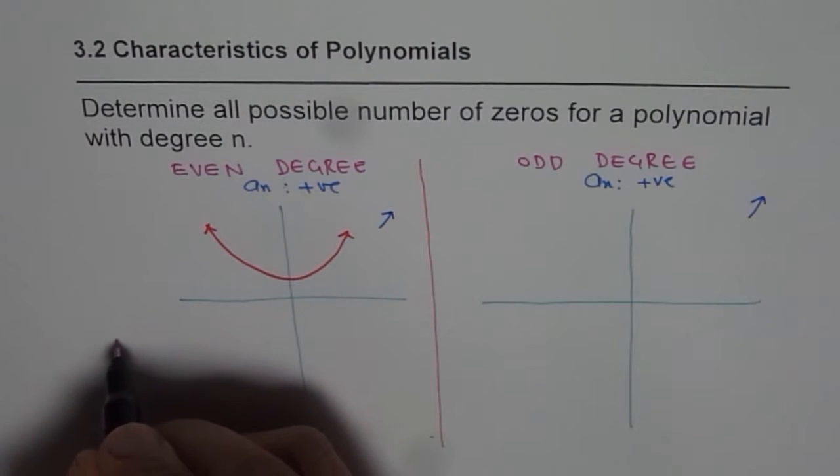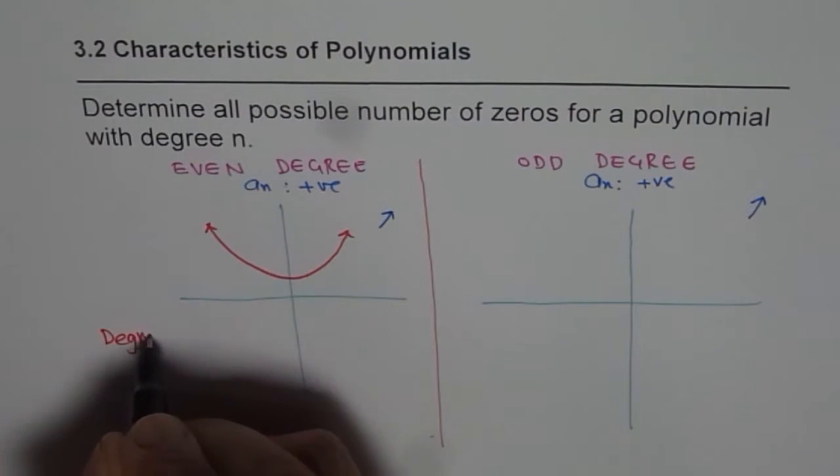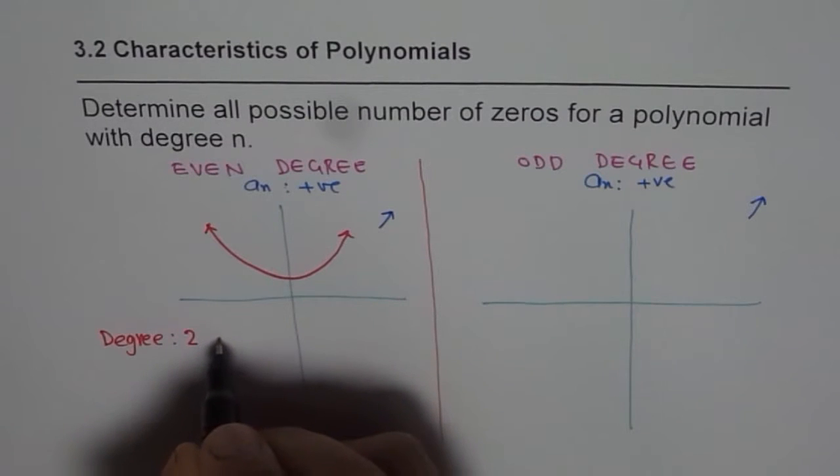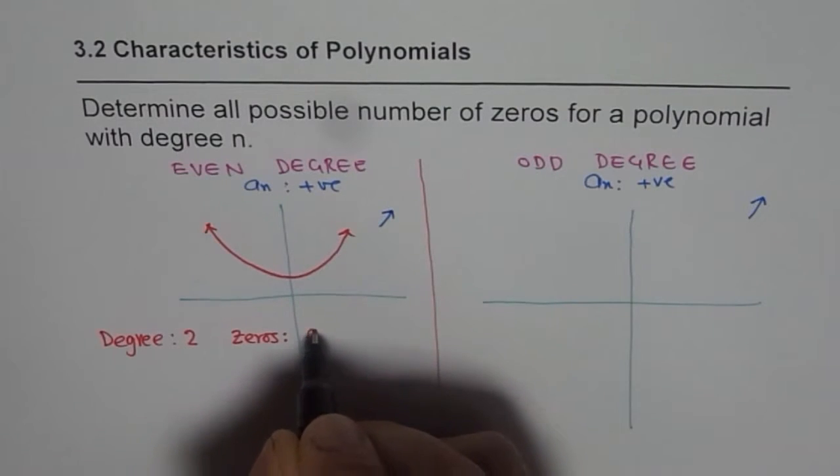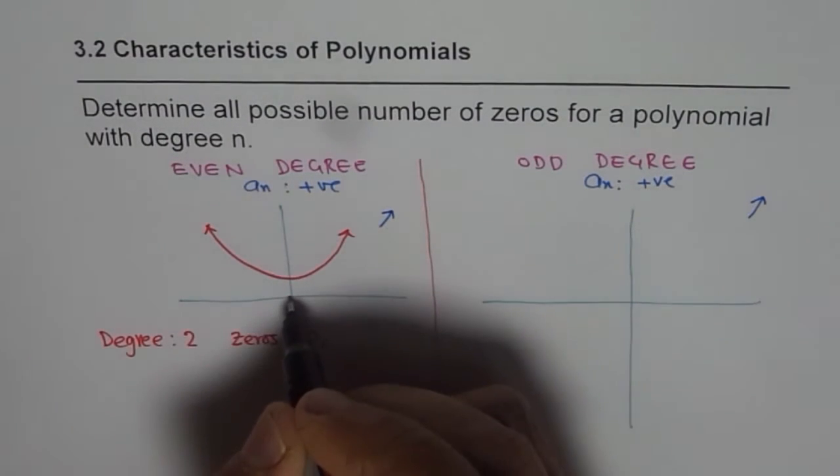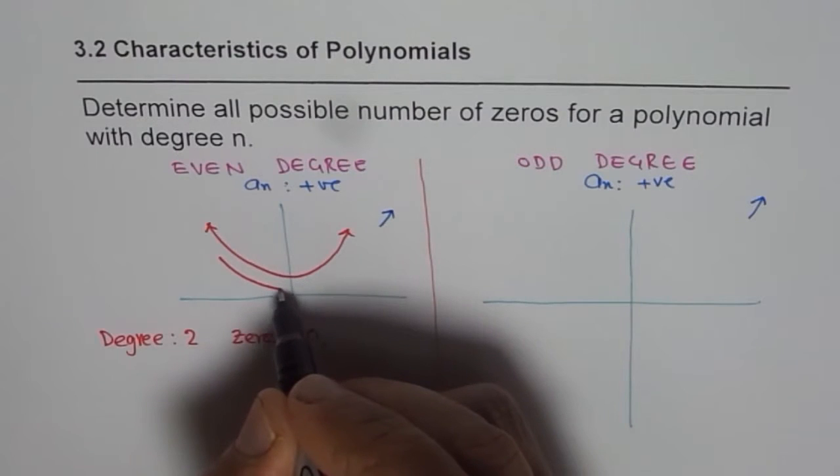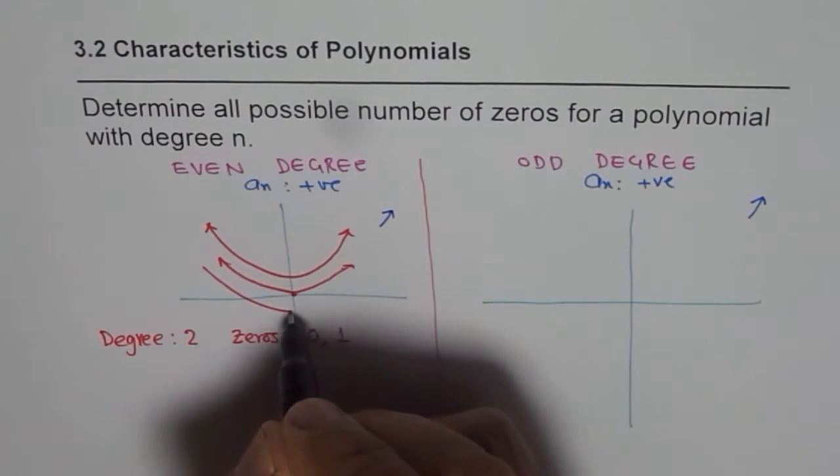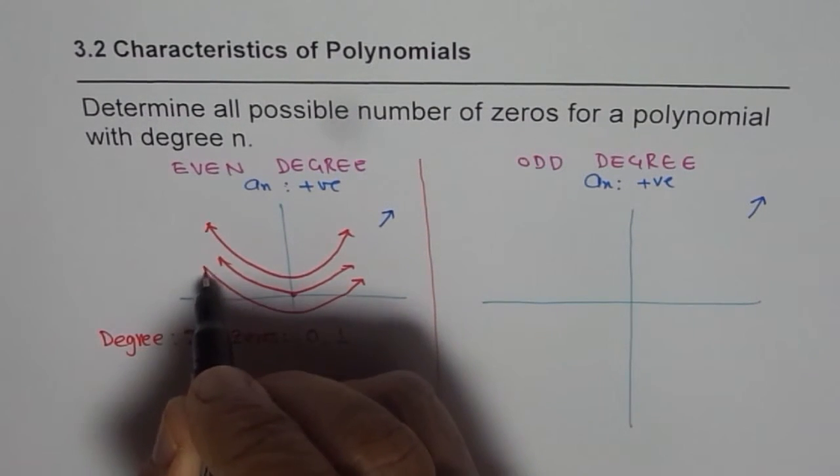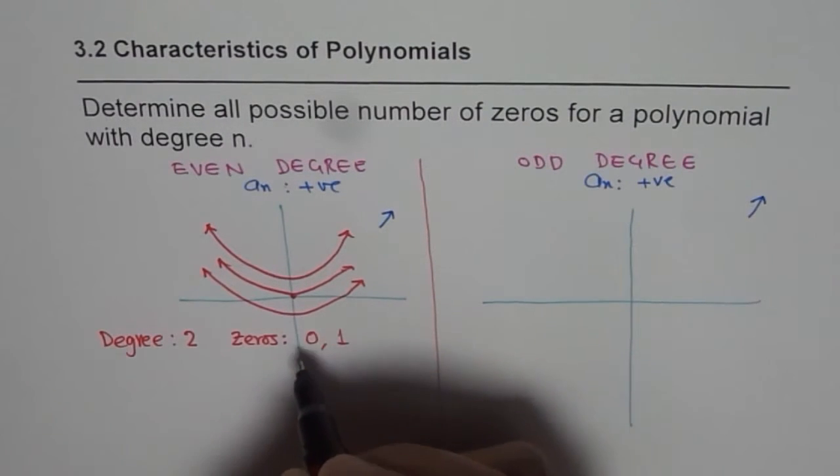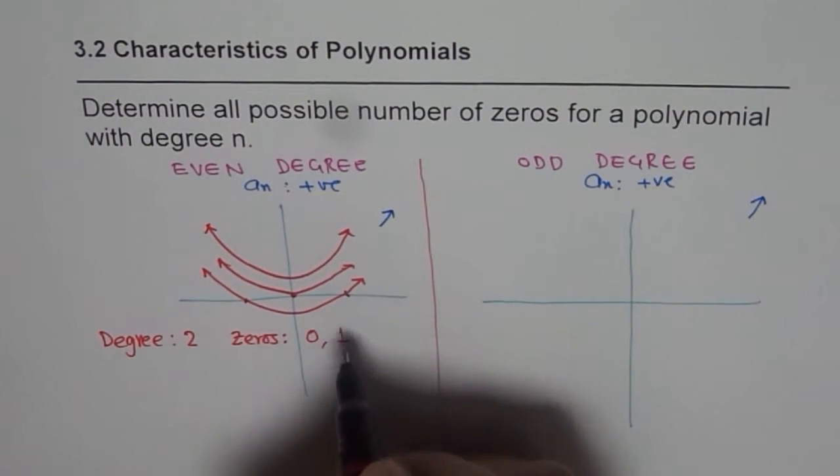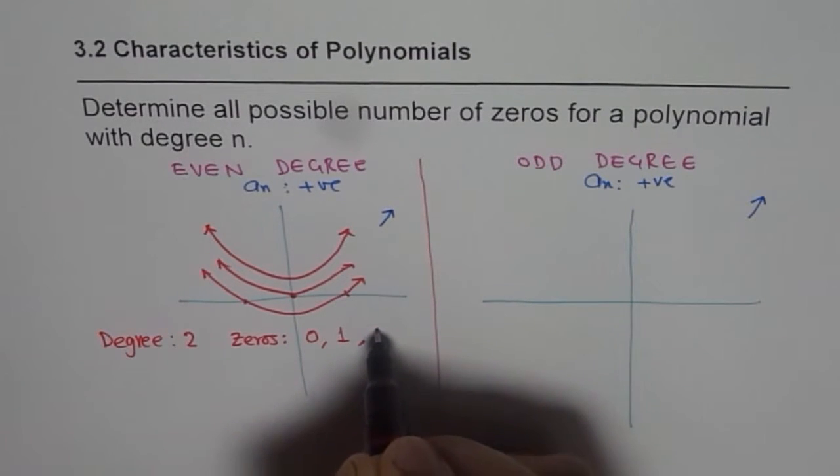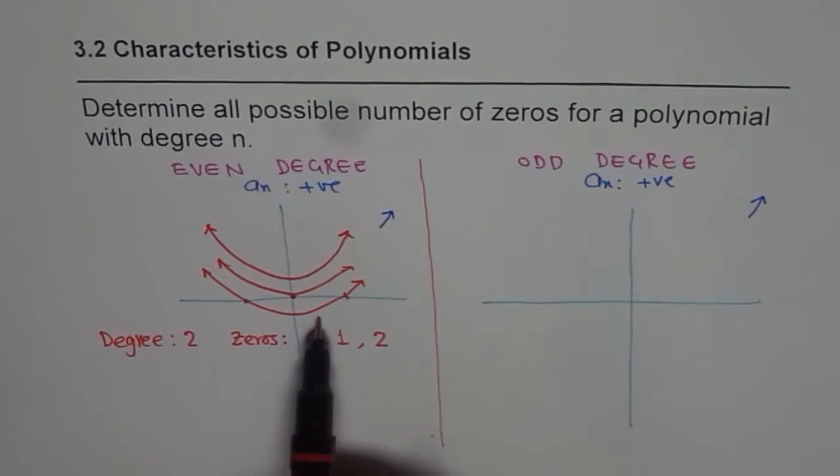We are taking one with degree two and let's count the number of zeros. Zeros we get is first zero, and then if I push it downwards, we get like this - one zero. And if I further push it downwards, that means vertical translation by negative one, in that case we get two zeros.